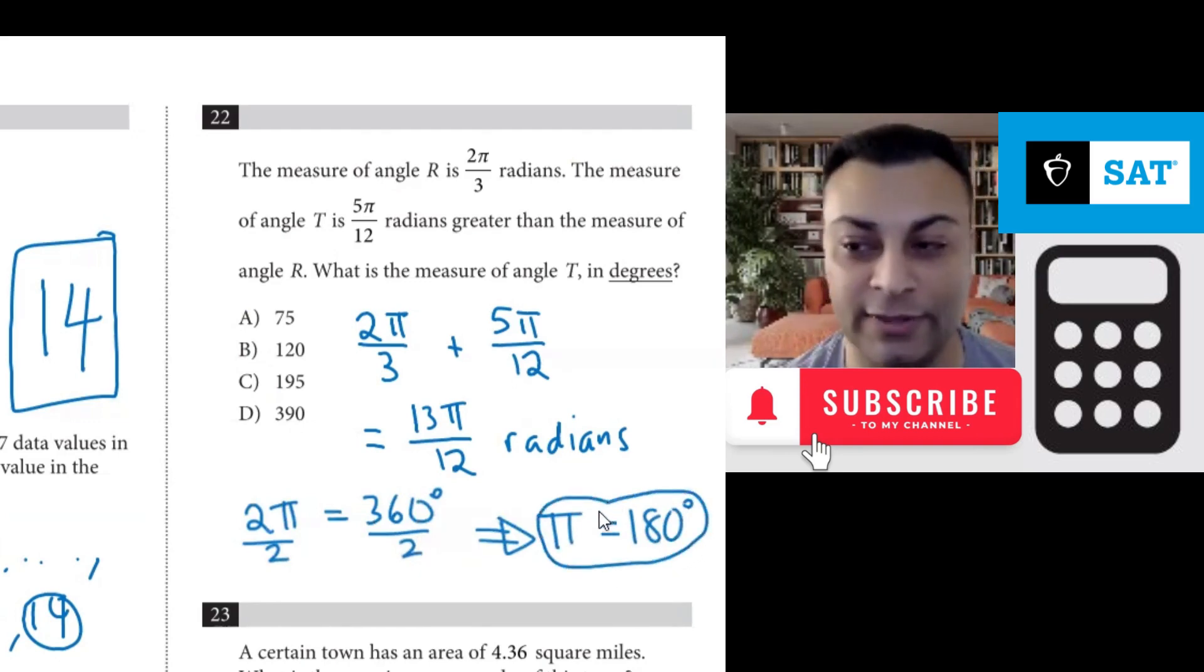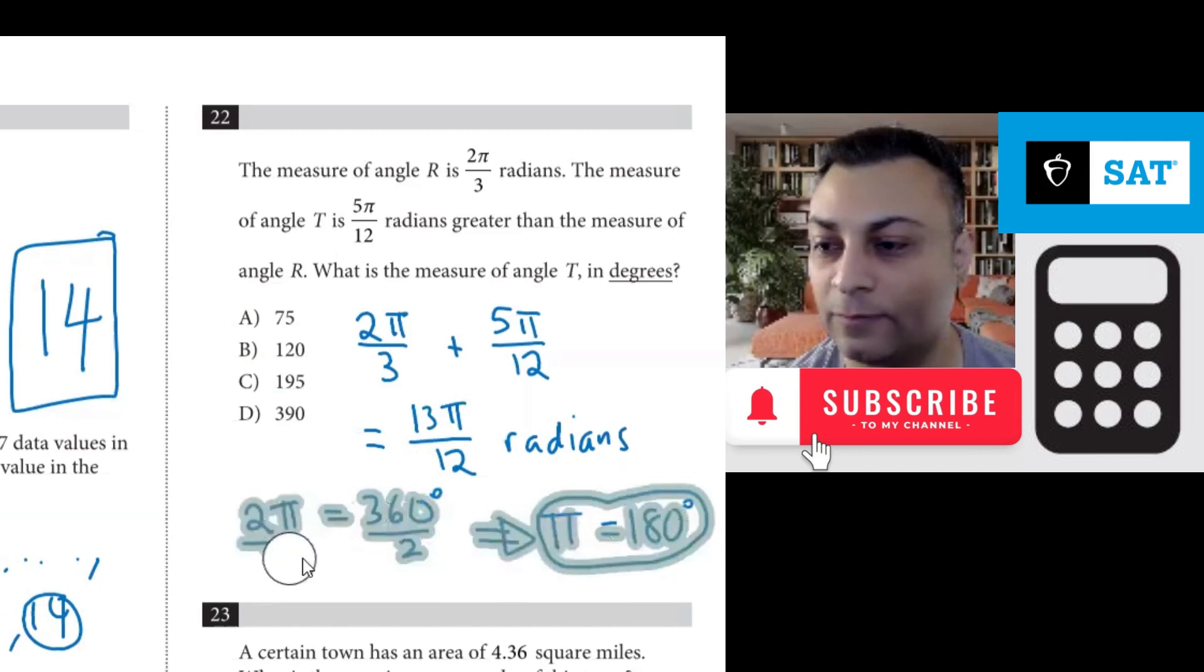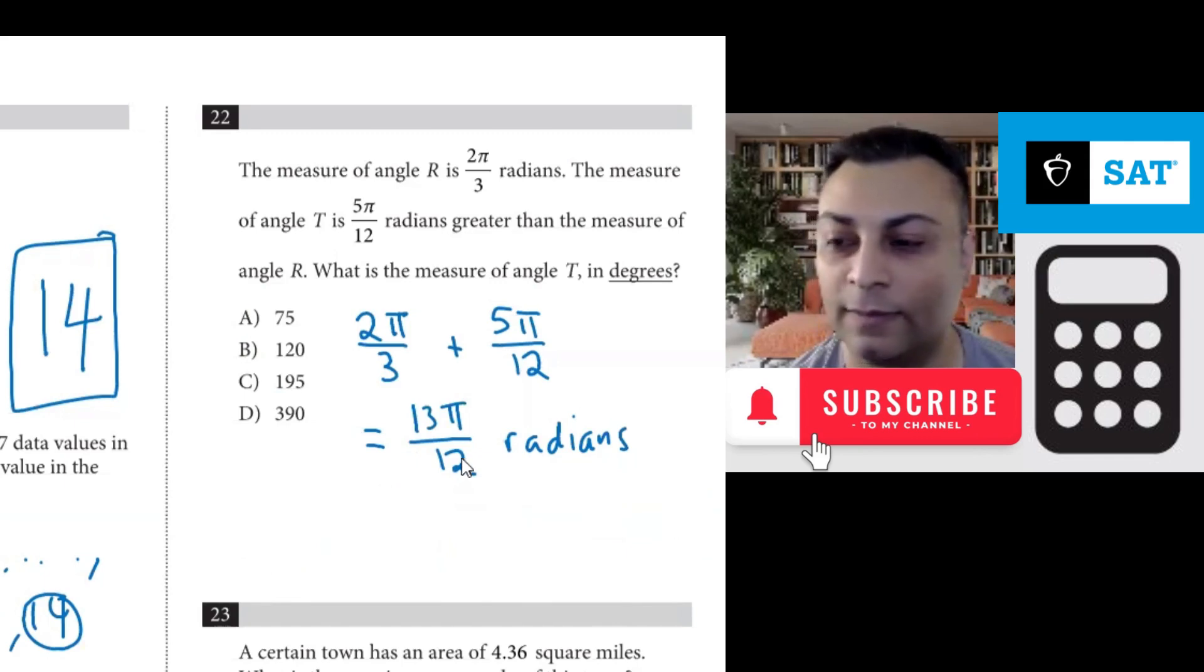Okay. And then with that, we could do 13 over 12 and instead of π you put in 180 degrees. That's one way to go about this because π is 180. Then you get 13 times 180 over 12. Let's use the calculator for that.